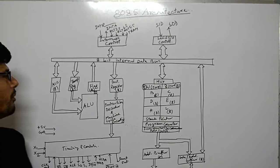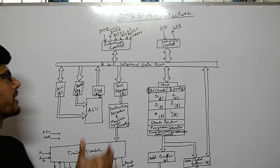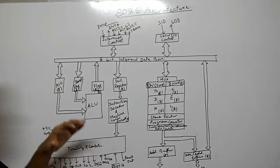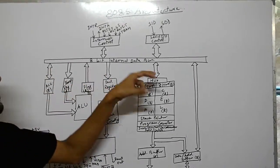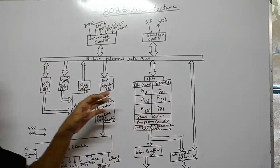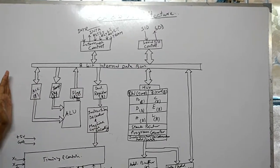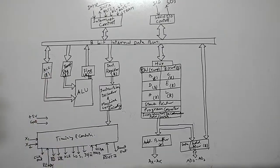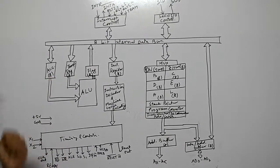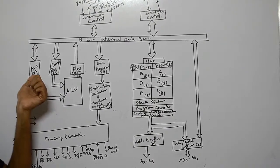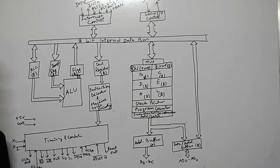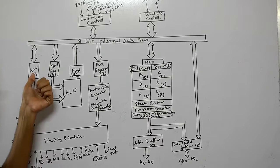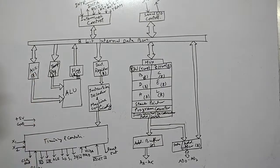When you go for the 8085 architecture or internal block diagram in your exam, first identify the 8-bit internal data bus. Starting from the left-hand side, the first block is the accumulator, abbreviated ACC. It is an 8-bit register used for general purpose and sometimes special purpose operations.